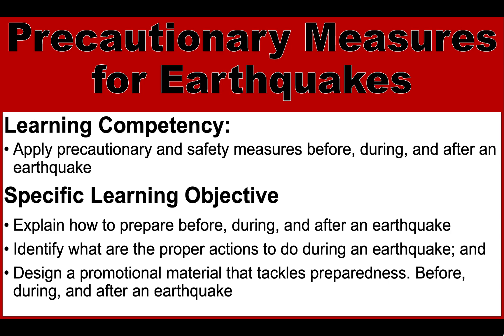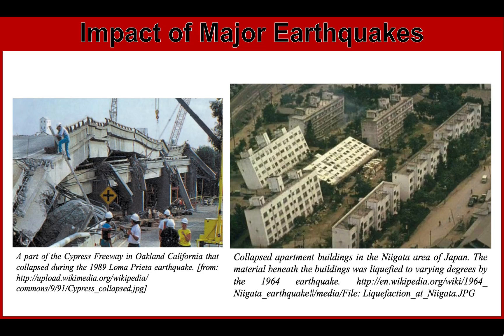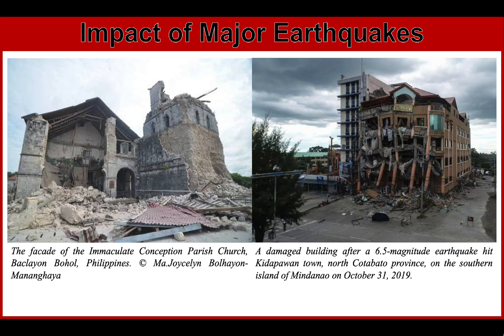These figures show some of the impacts of major earthquakes. There is a picture of a bridge in Oakland, California that collapsed during an earthquake. The second figure shows collapsed apartment buildings in the Niigata area of Japan, due to liquefaction which we studied in previous videos. This also happened in the Philippines — the left image shows the facade of the Immaculate Conception Parish Church in Bohol, and the right shows a damaged building after a 6.5 magnitude earthquake in Mindanao in 2019.